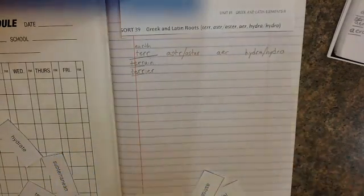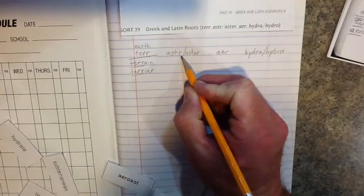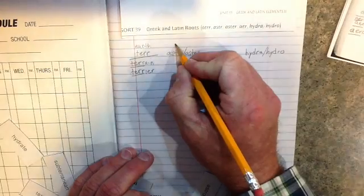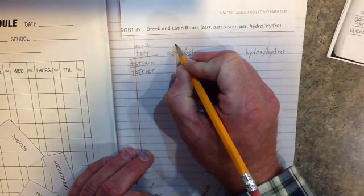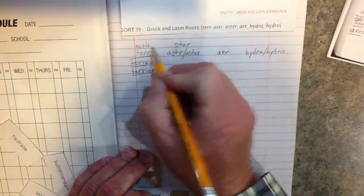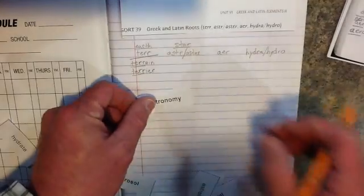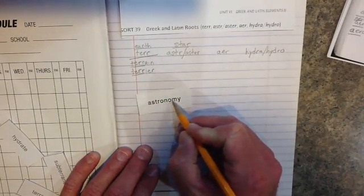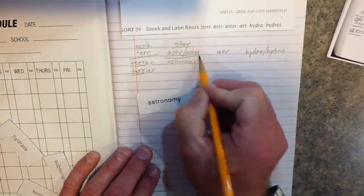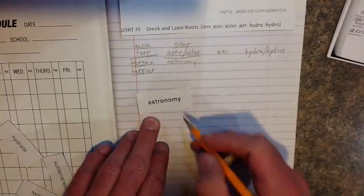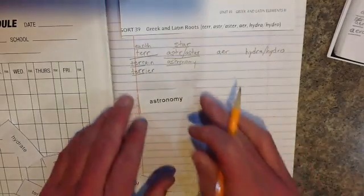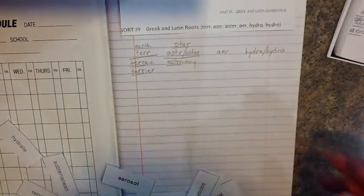Our next exemplar we have over here is A-S-T-R, A-S-T-E-R. This is a Greek root that means star. So we've got earth and we've got star. When we look at the word astronomy, make sure that you're saying the word as you write it. Sound it out. Astronomy, we've got the stars, which is the study of the stars.